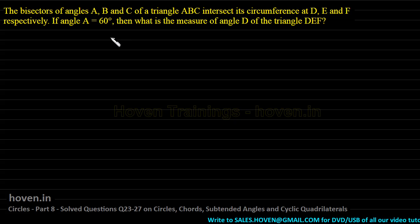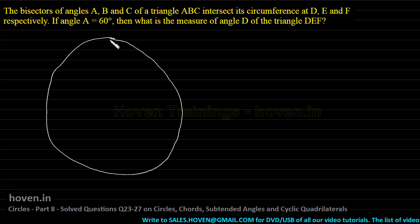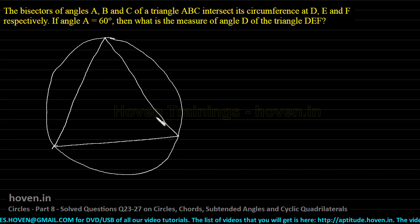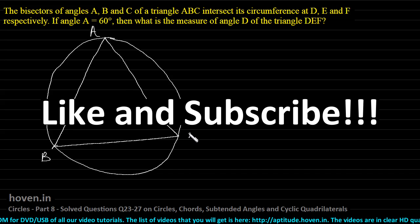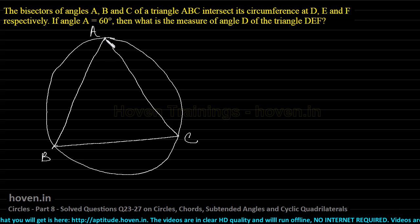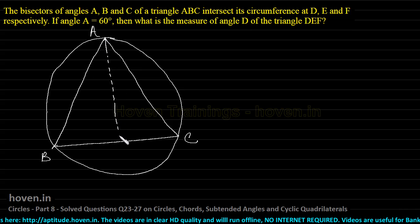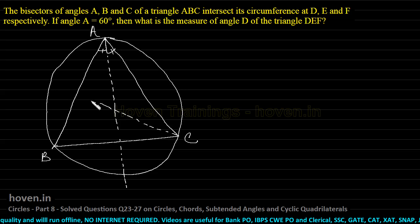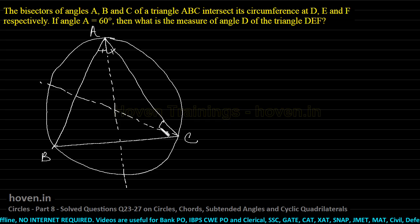Let us first draw a schematic for this question. Suppose this is a circle and there is a triangle ABC contained in this circle. We draw the bisector of angle A, the bisector of angle C, and likewise the bisector of angle B.